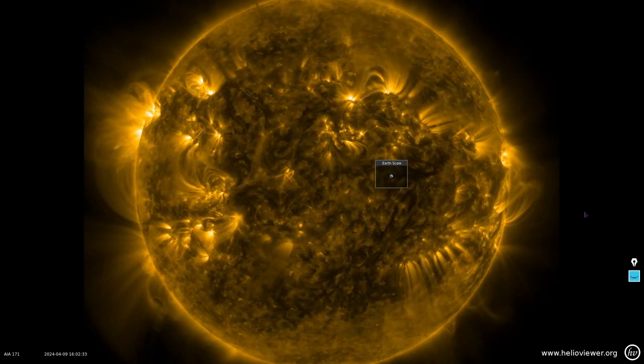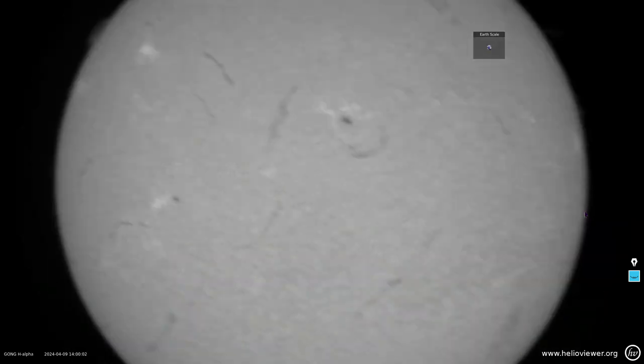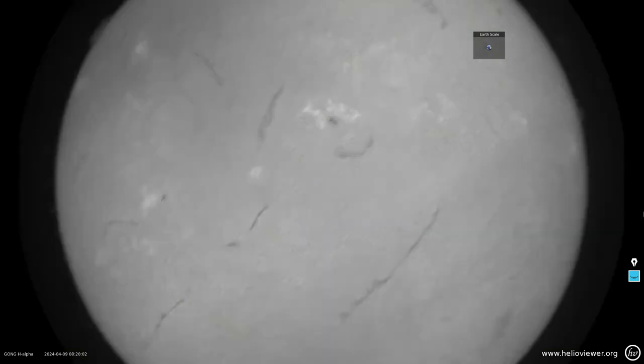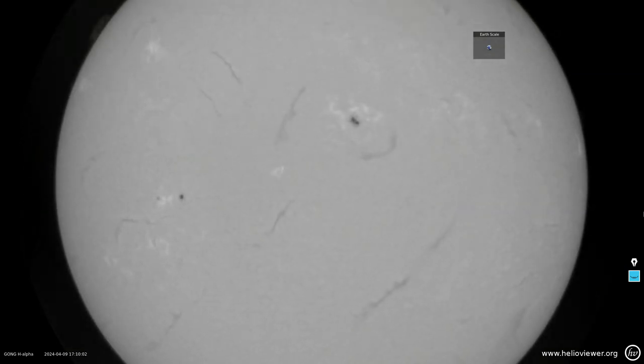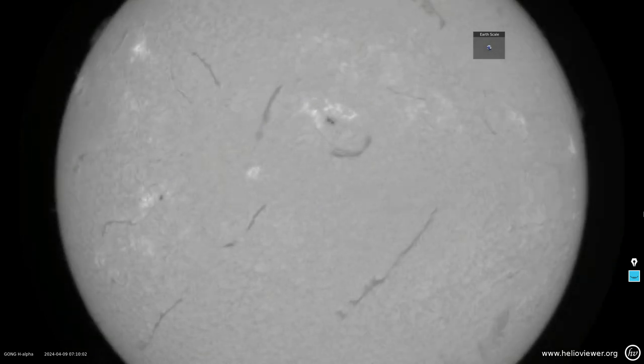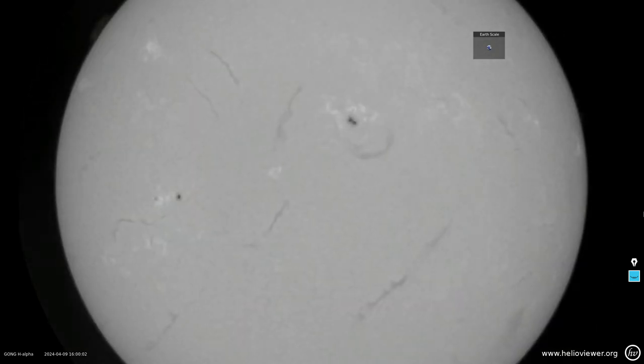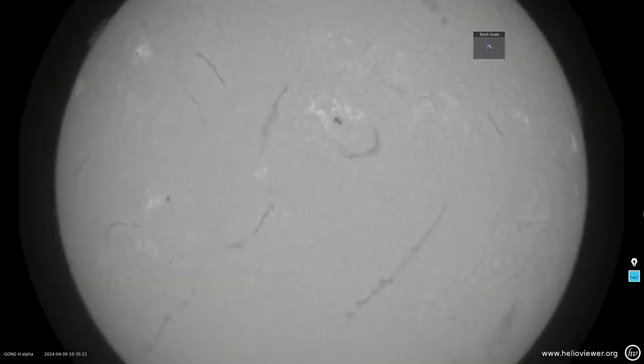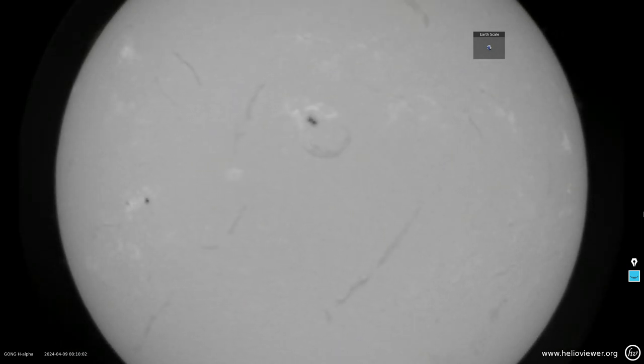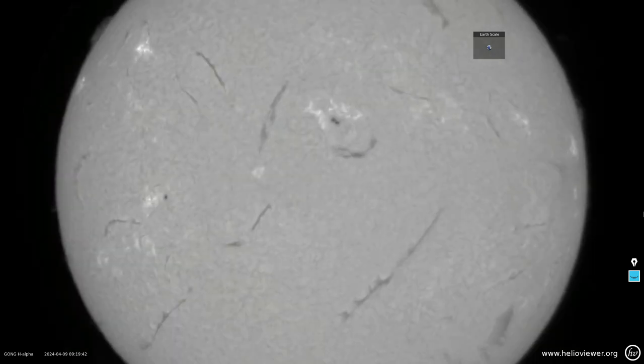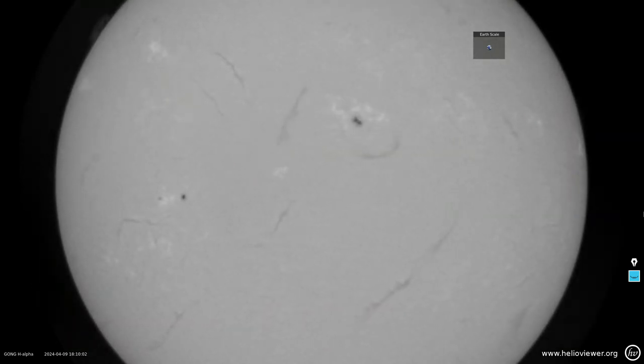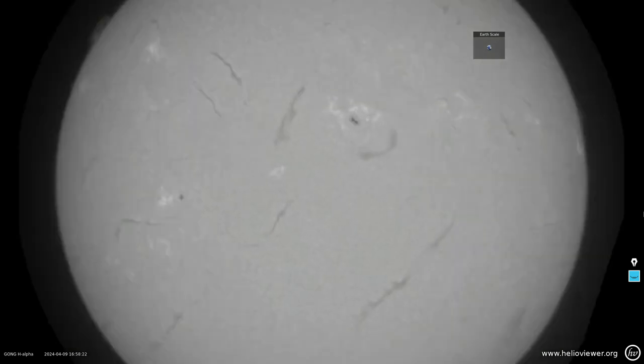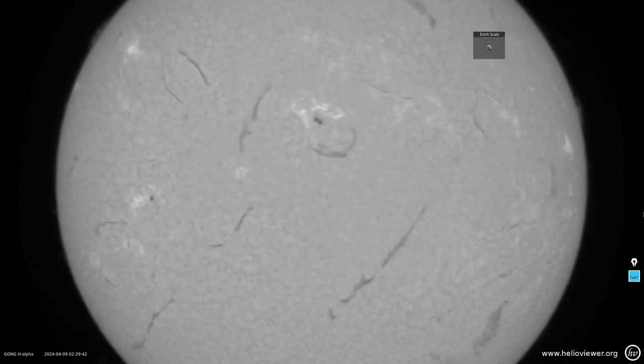Did you know that you can actually view the GONG data from Helioviewer? There's the GONG data, that's hydrogen alpha. Those dark features that you see there, those are plasma filaments. They're similar to prominences although not hanging off the edge of the disk. Those plasma filaments can all become coronal mass ejections, and as you can see there are no less than a dozen of them pointed right at Earth.